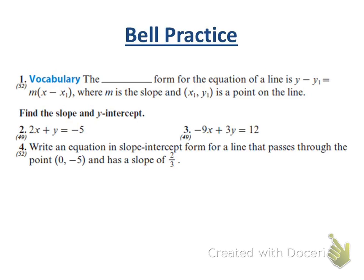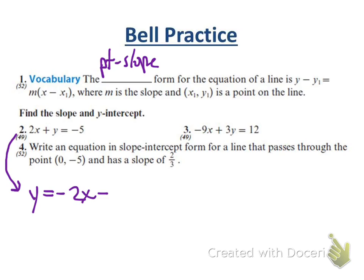What is the answer to number one? Point-slope form — because we've got M as the slope and X1, Y1 as the point on the line. For number two, the slope is negative 2 and the Y-intercept. Right — slope-intercept form: Y equals negative 2X minus 5. So the slope is negative 2 and the Y-intercept is the point (0, negative 5).